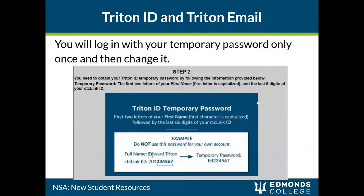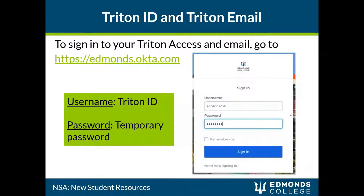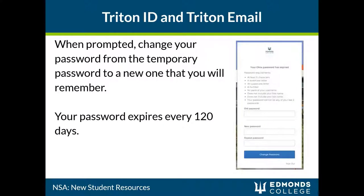Write down or record this ID so you don't forget it. The system also creates a temporary password. You will only use this temporary password once when you log in, then you will be able to change it. To sign in to your Triton access and email, go to edmunds.okta.com and log in using your Triton ID and temporary password. When the system prompts you, change your password to a new one you will remember. Your password expires every 120 days and you will need to change it again then.